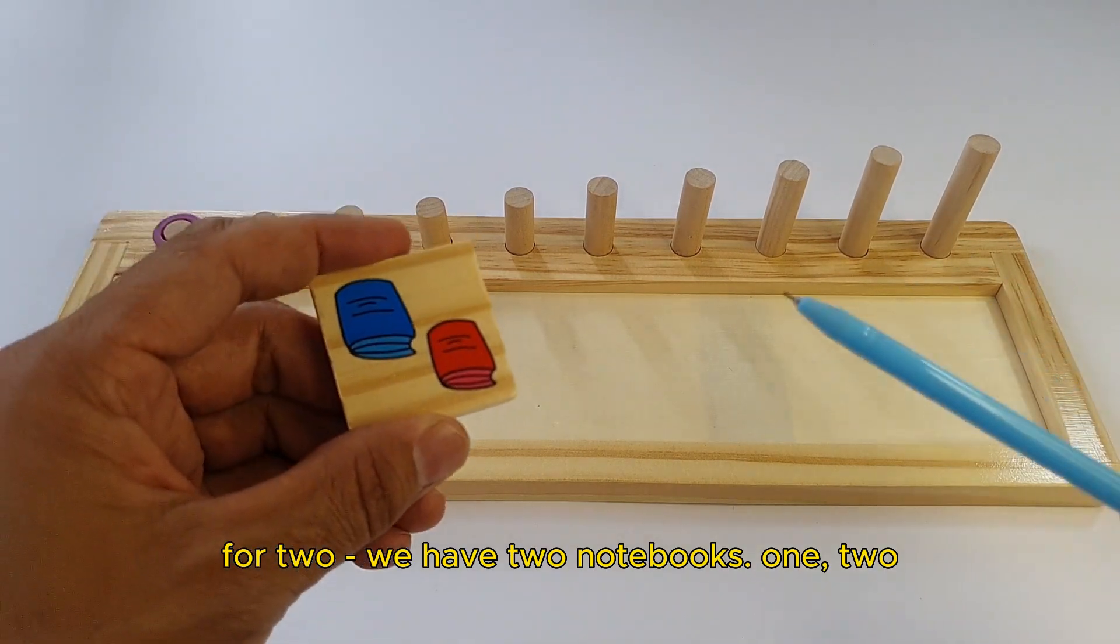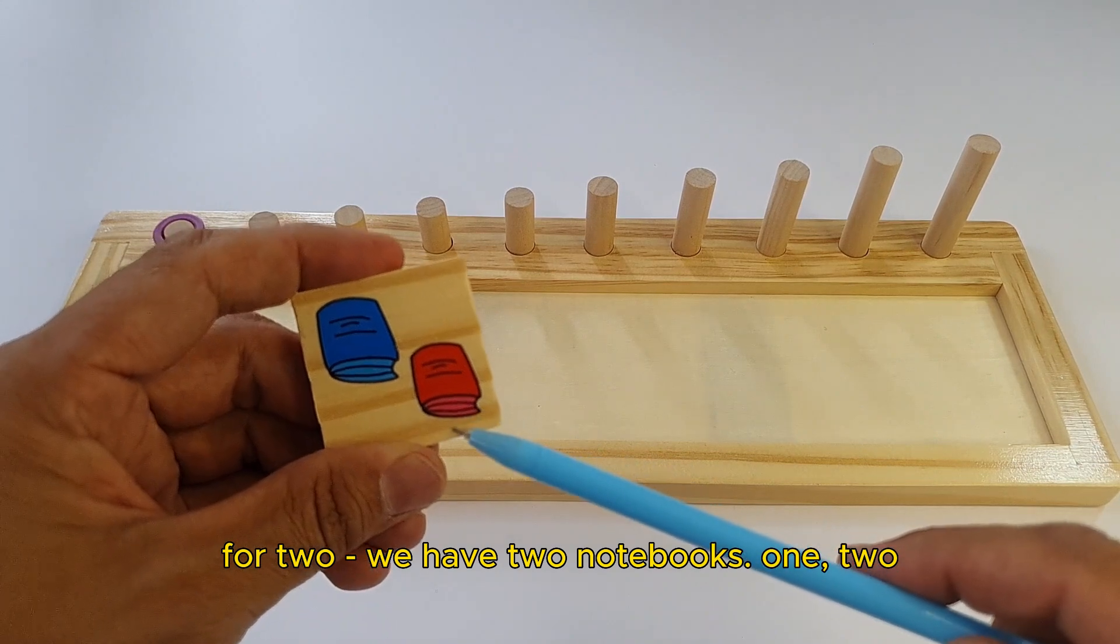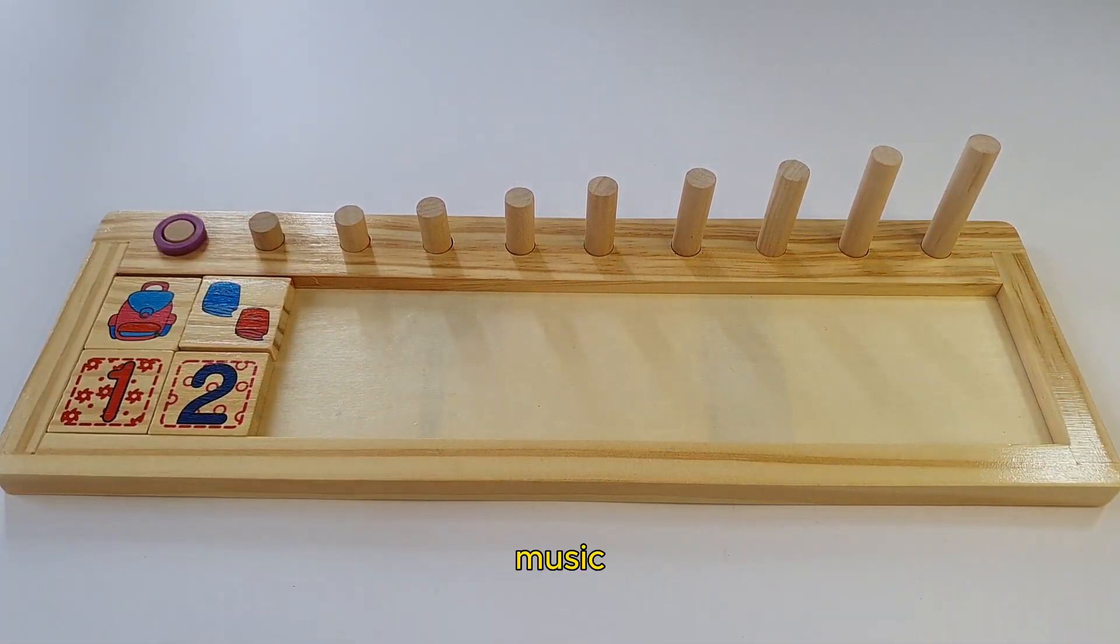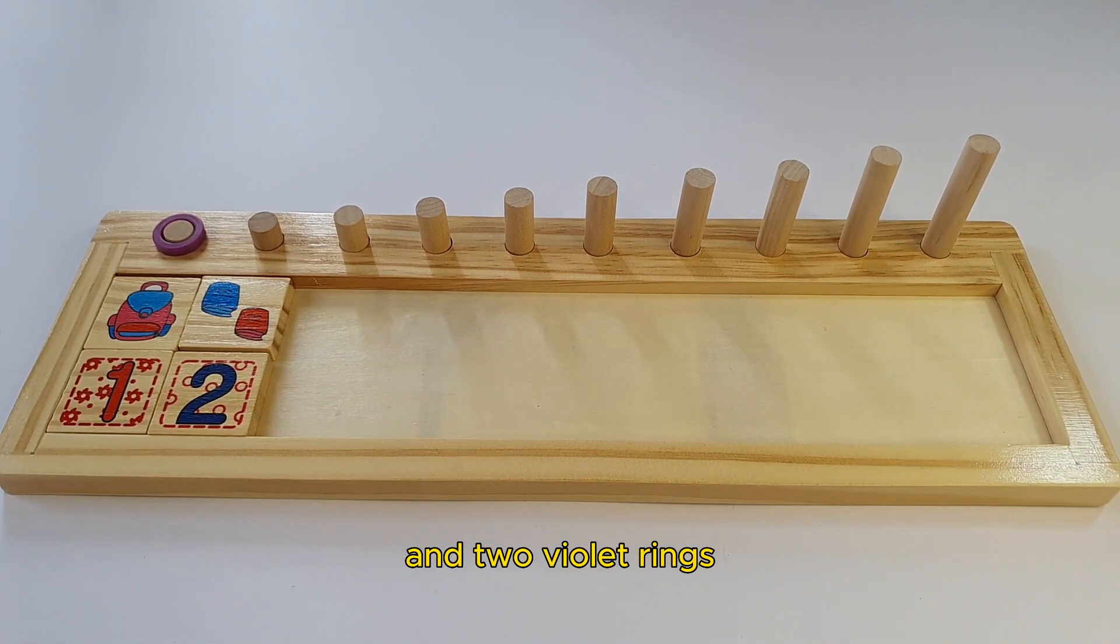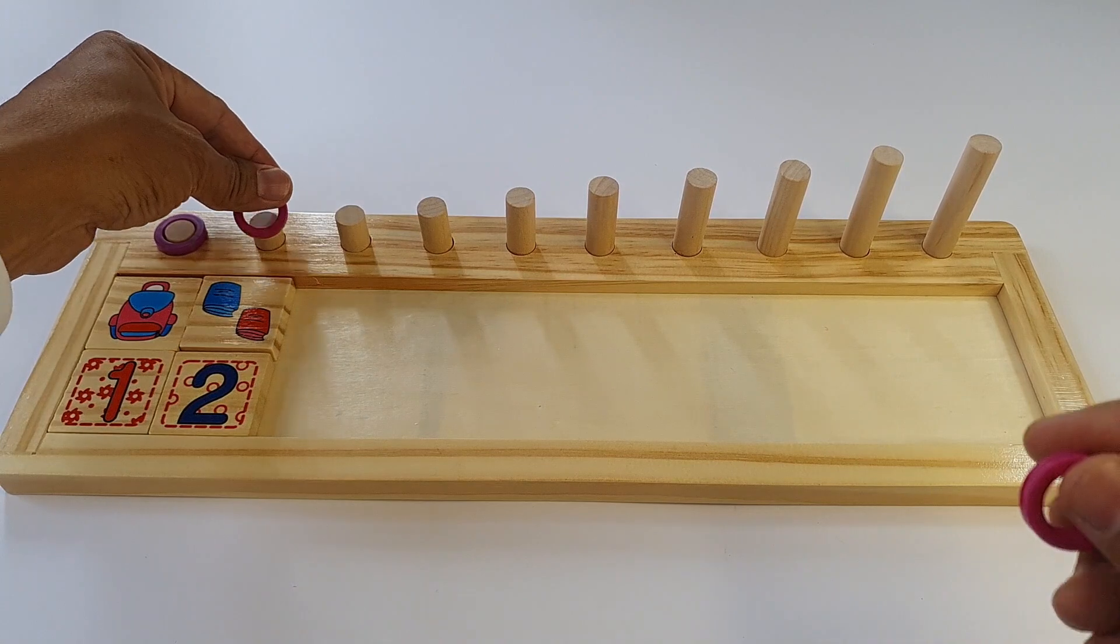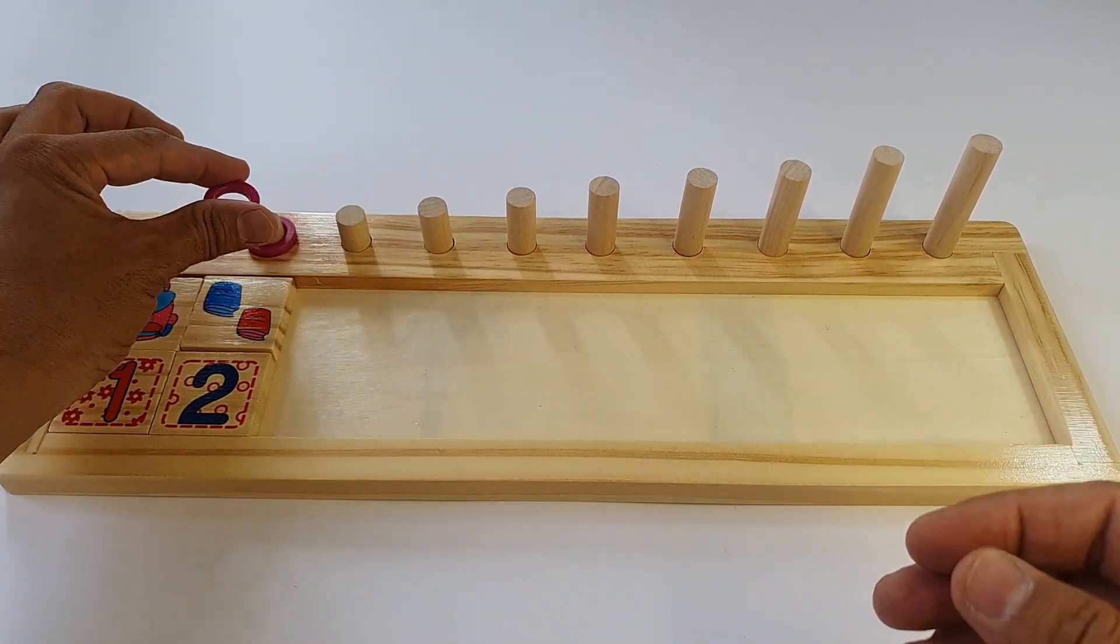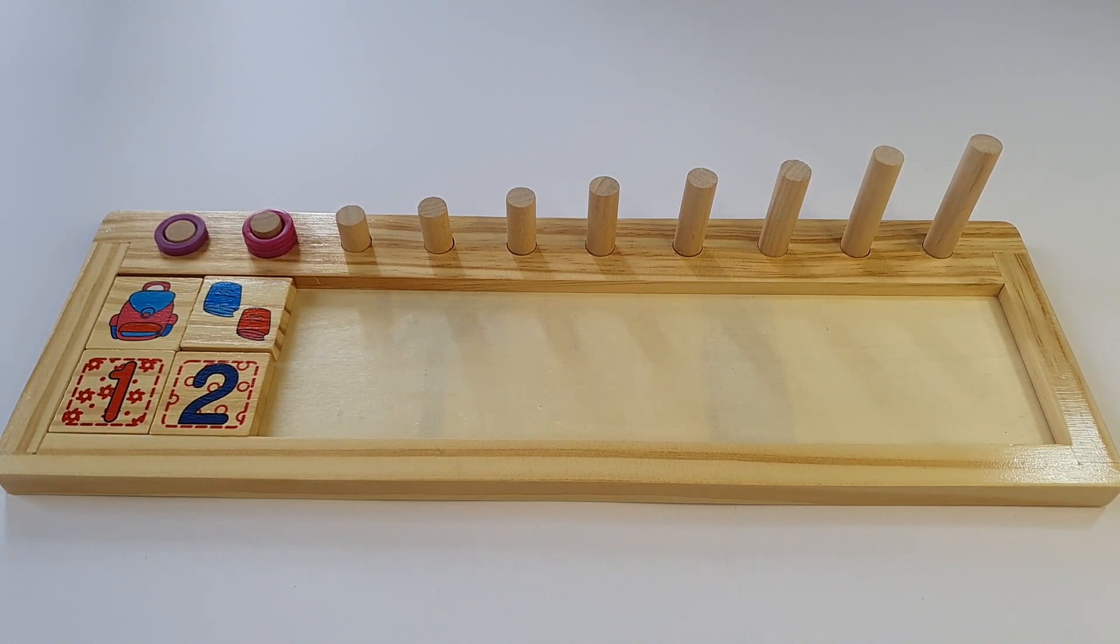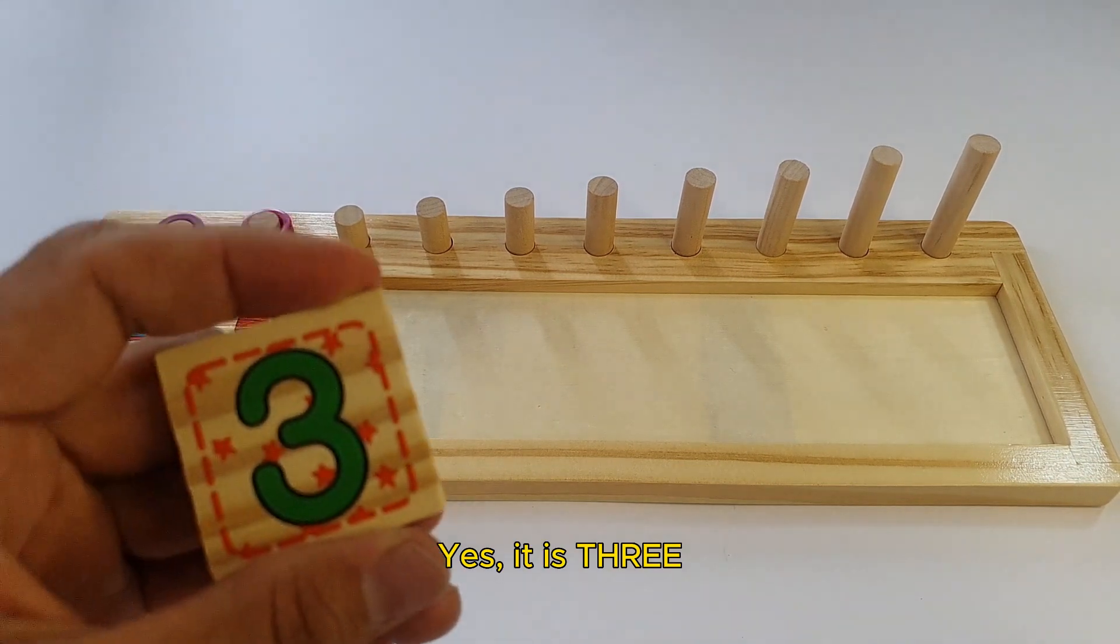For two, we have two notebooks. One, two. And two violet rings. One, two. What is the next number? Yes, it is three.